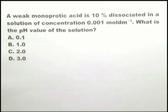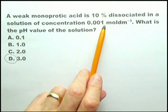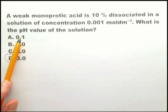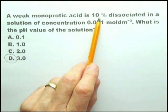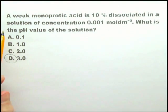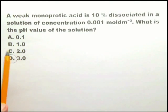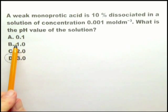Looking at this one, I would say immediately that the pH value of the solution is 3. The concentration is 0.001. No way will it have a pH of 0.1 — that is a very concentrated solution of a strong acid like hydrochloric acid. And this is not only a weak acid, it's only 10% dissociated and it's quite a low concentration solution. So no way will it have a pH of 0.1, nor will it have a pH of 1, nor will it have a pH of 2.